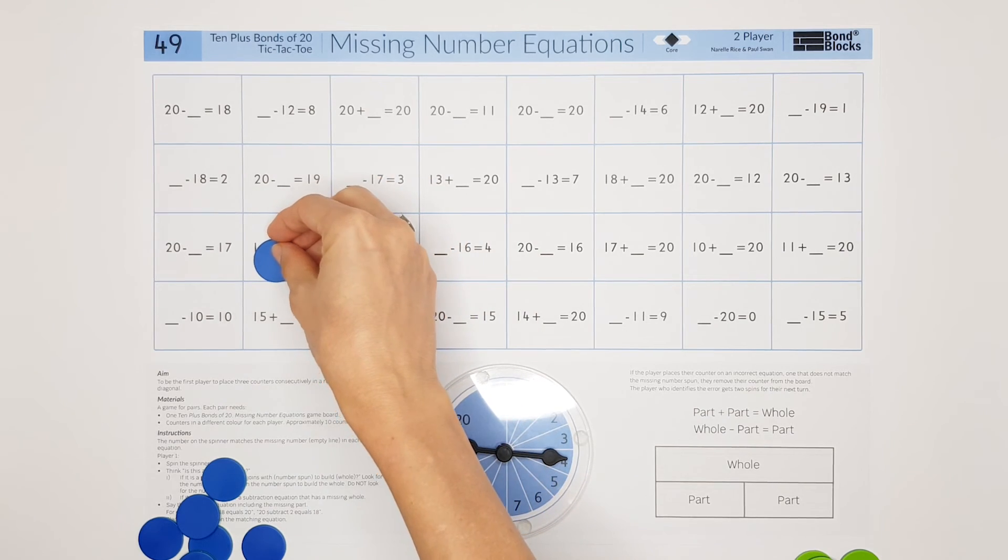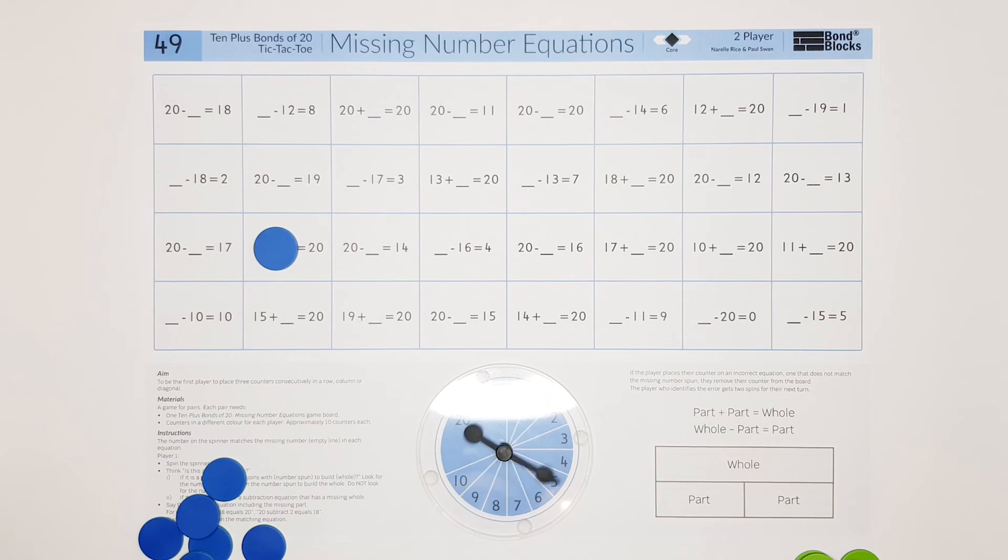Player two has their turn and they spin 20, so they need to place their counter where the whole of 20 would fit. I'm going to place it here and I say 20 subtract 18 equals 2.